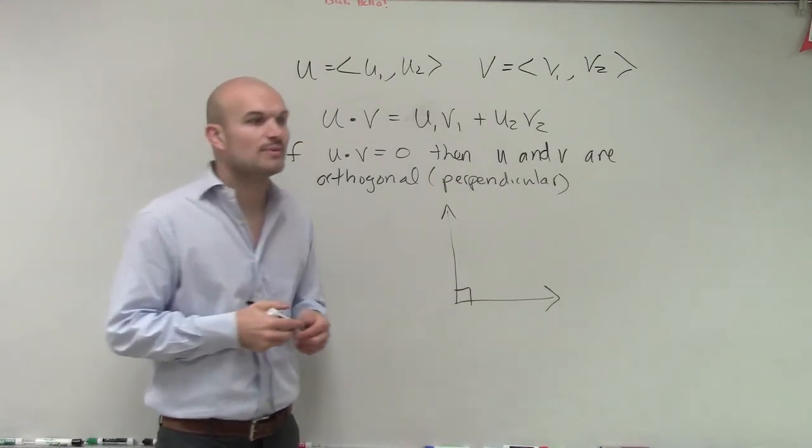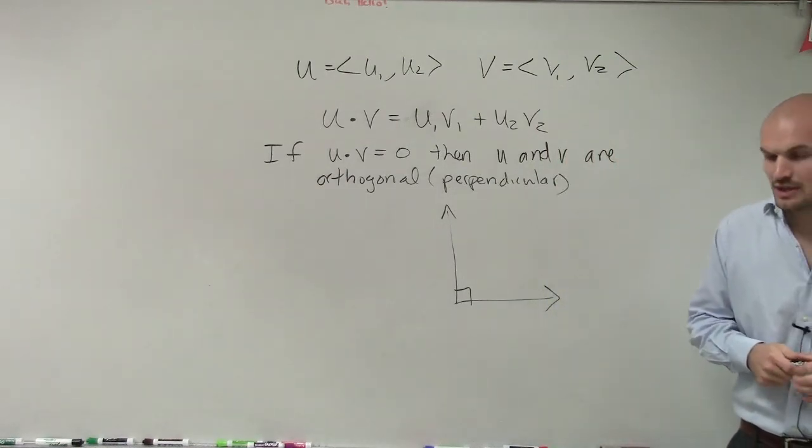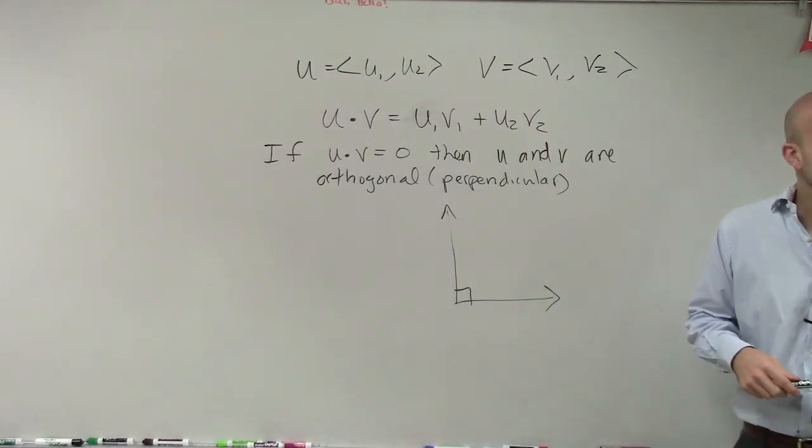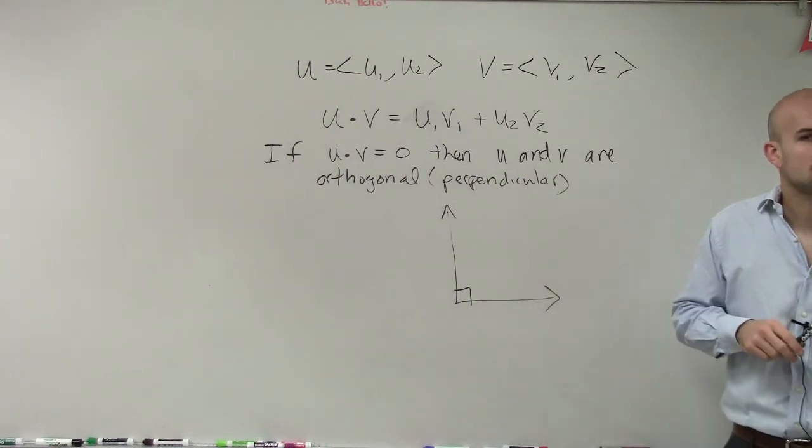So that's one way we're going to be using the dot product to be able to see if we have perpendicular lines or not. So if we have perpendicular lines, then we'll know the dot product is going to equal zero.